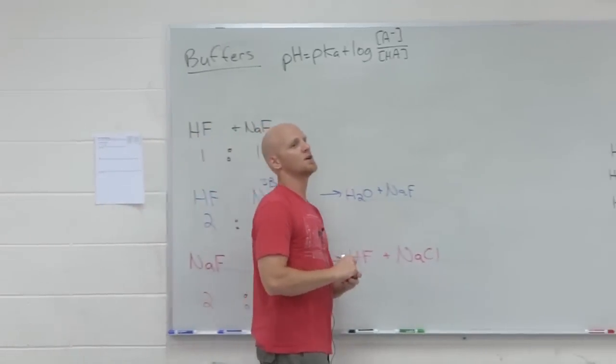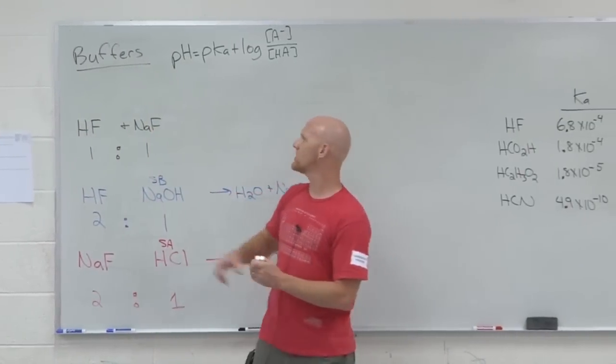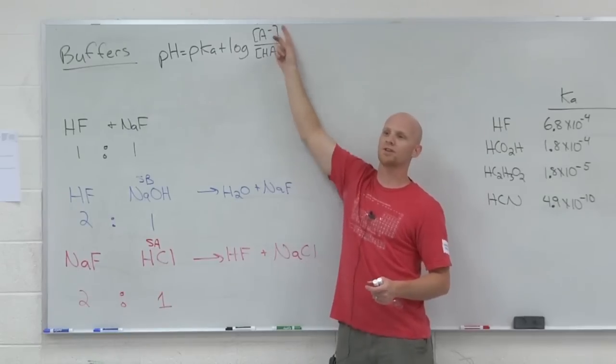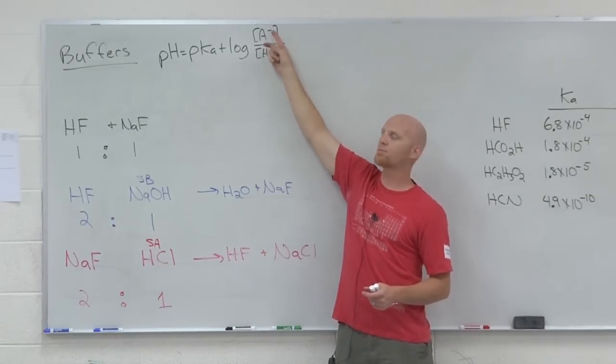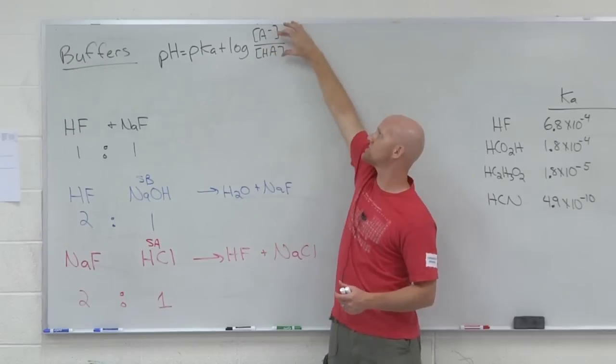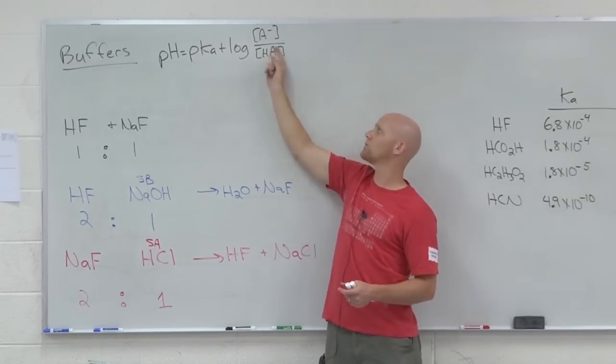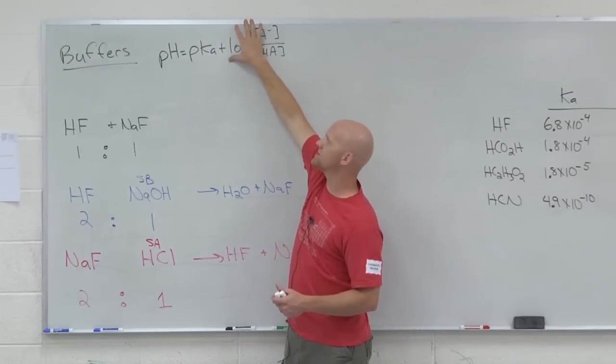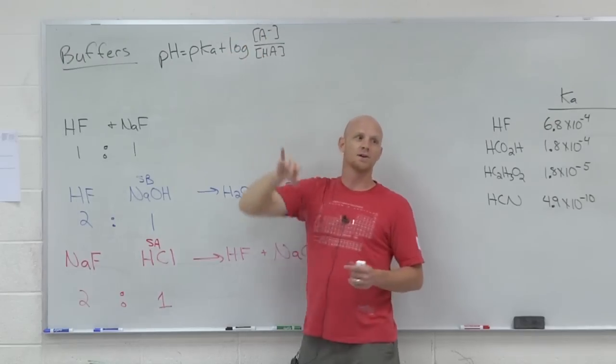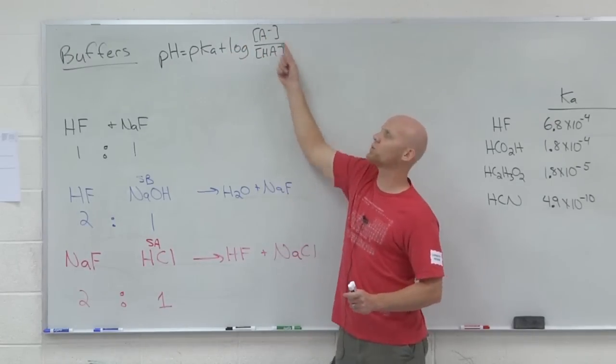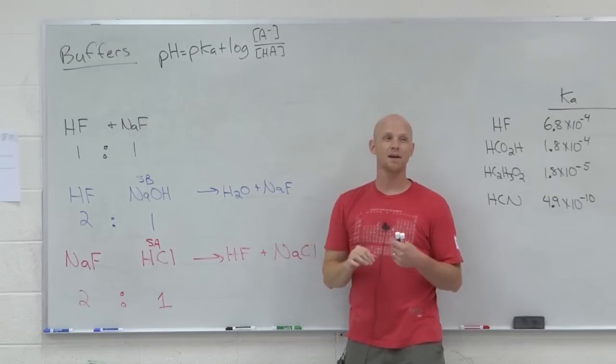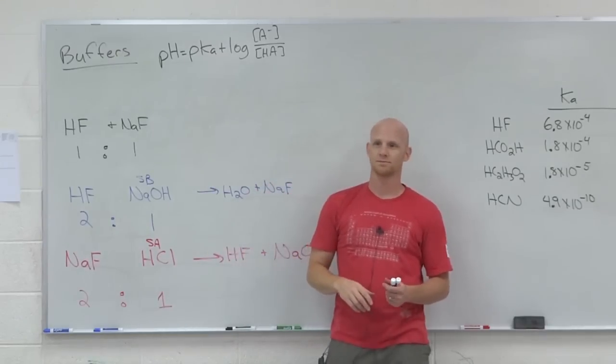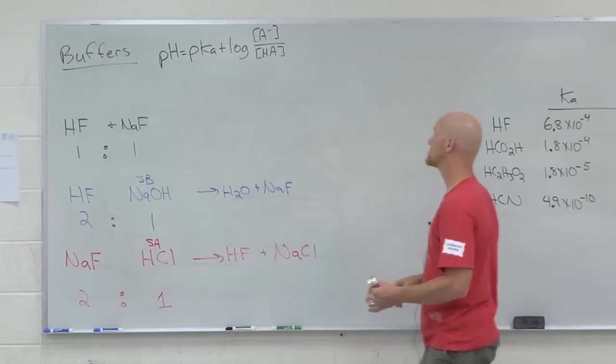A buffer, again, is at its best when you have a one-to-one ratio of weak acid conjugate base. So, in this case, when these are present in a one-to-one ratio, weak acid conjugate base, if these are equal amounts, then this ratio is going to equal one. And the log of one is zero. And if all this goes away, then what's your pH equal to? The pKa. So here, a buffer's at its best when these are one-to-one. Is the same thing as saying a buffer's at its best when the pH of the solution's equal to the pKa of the acid.